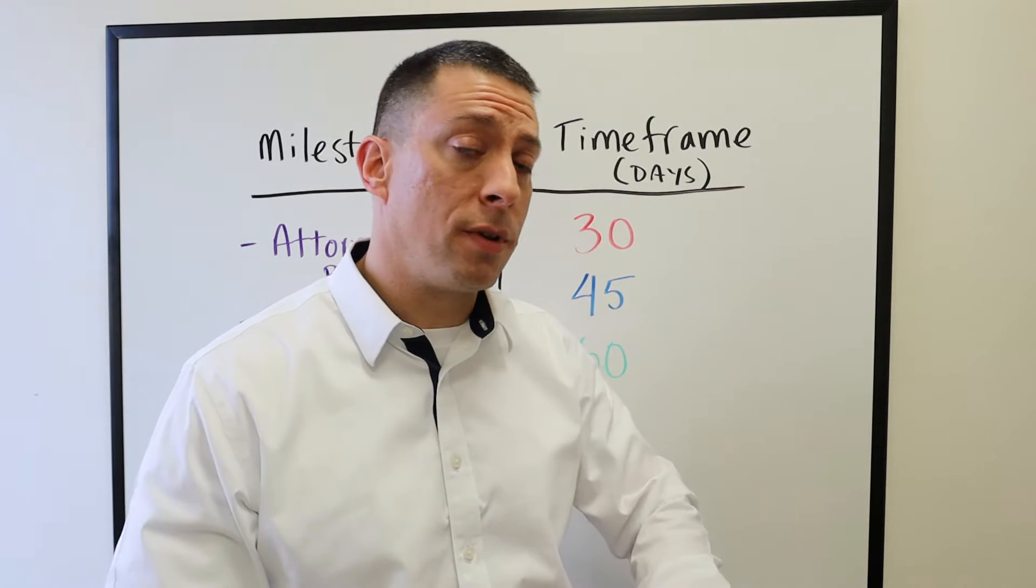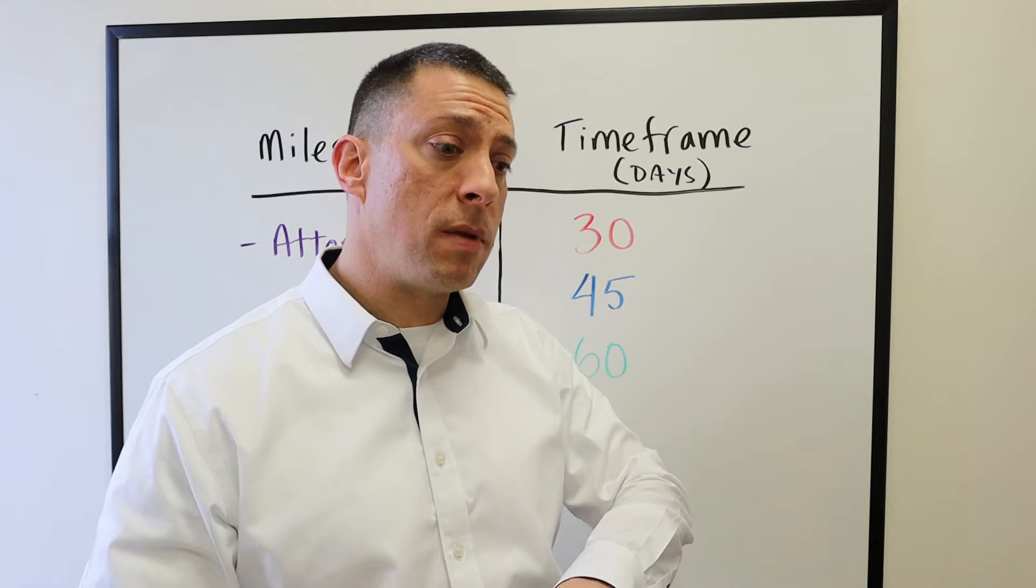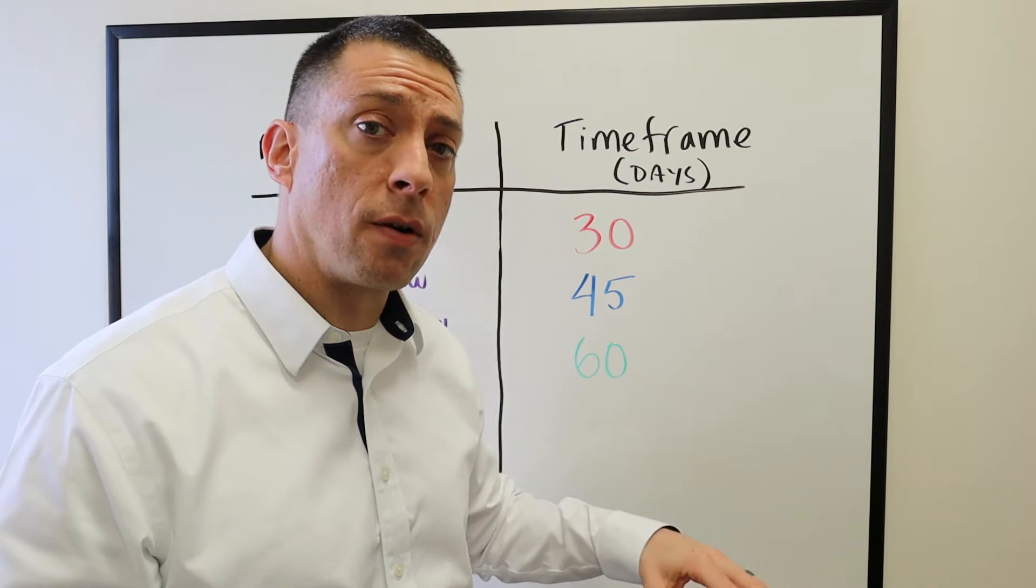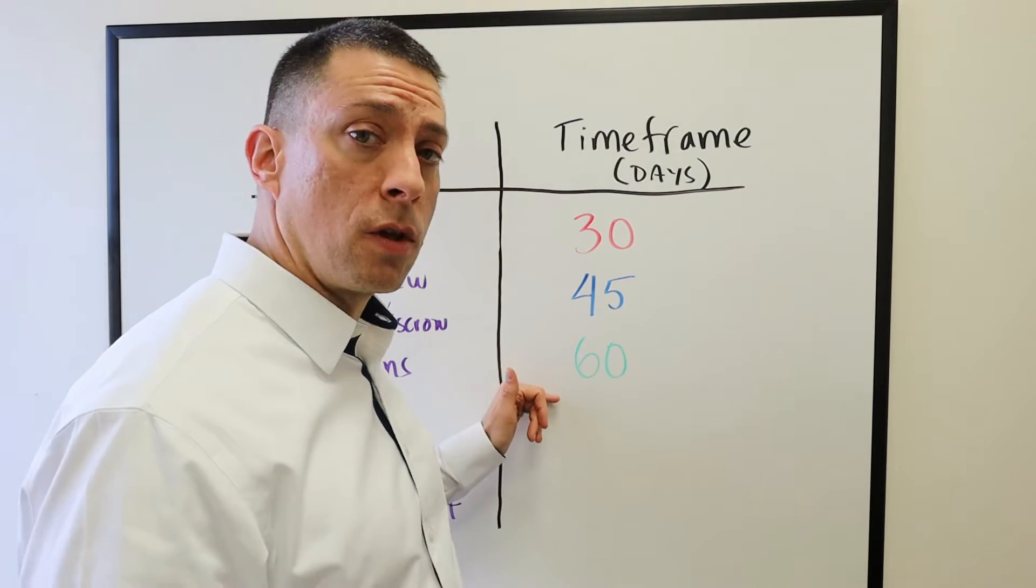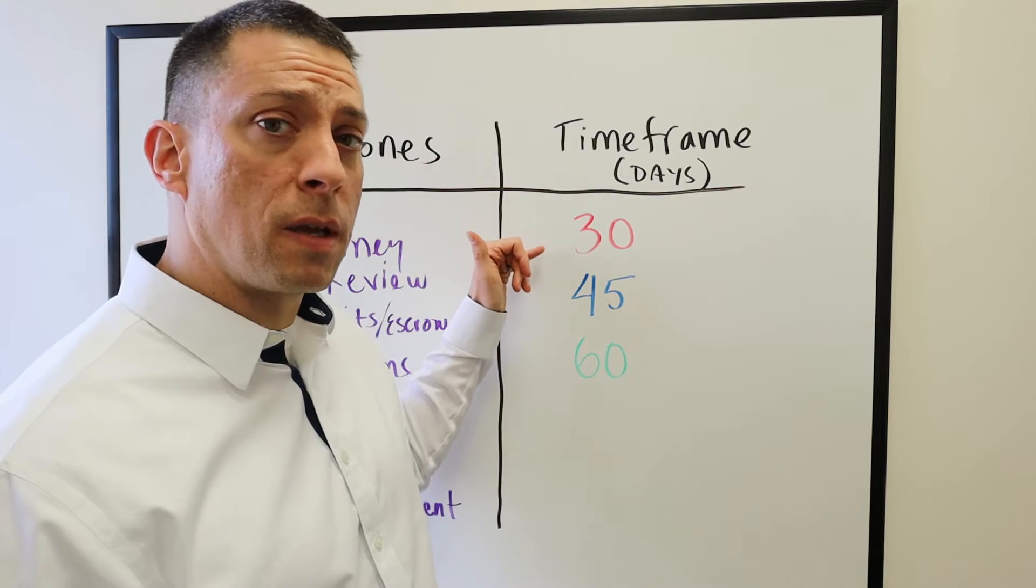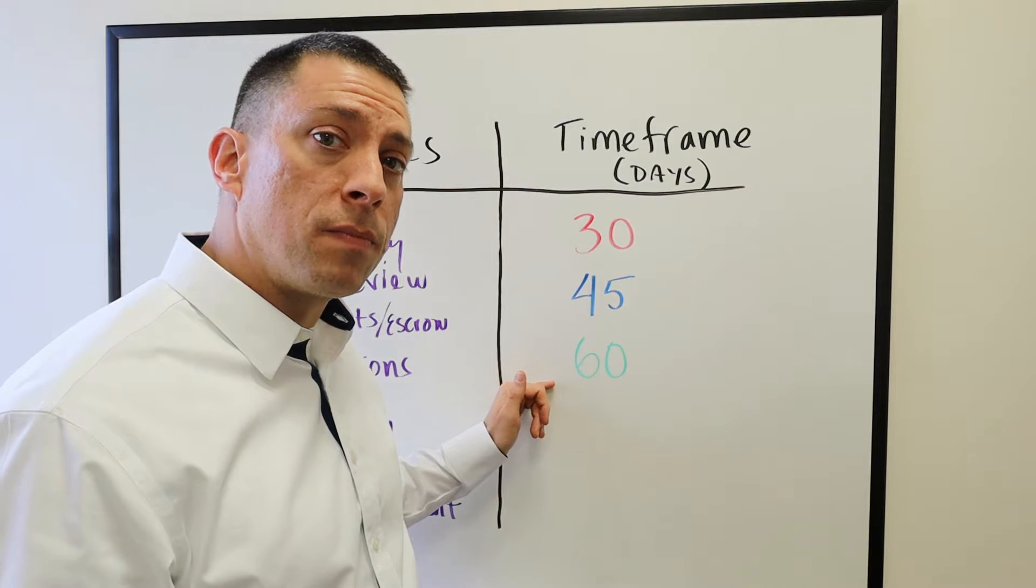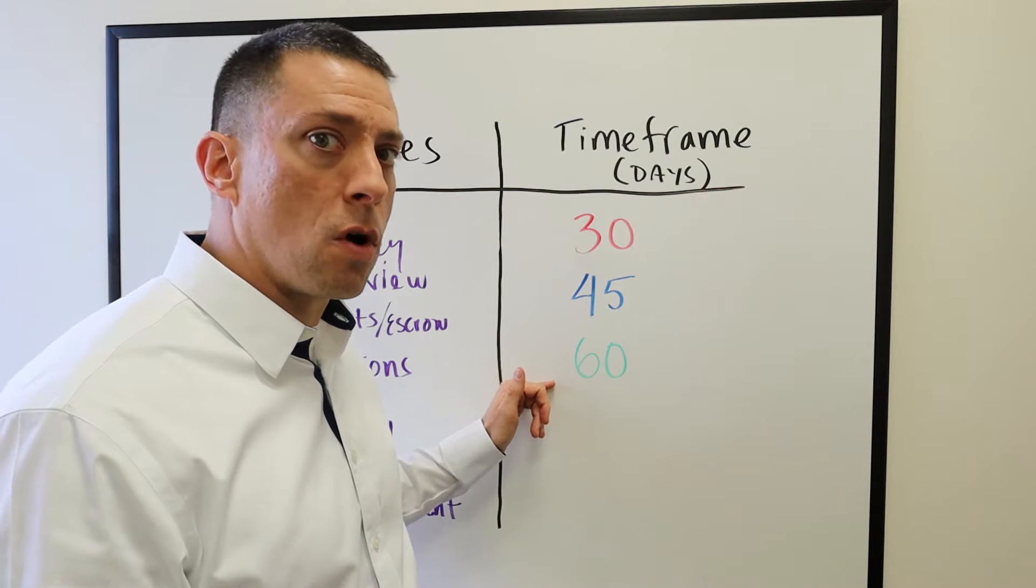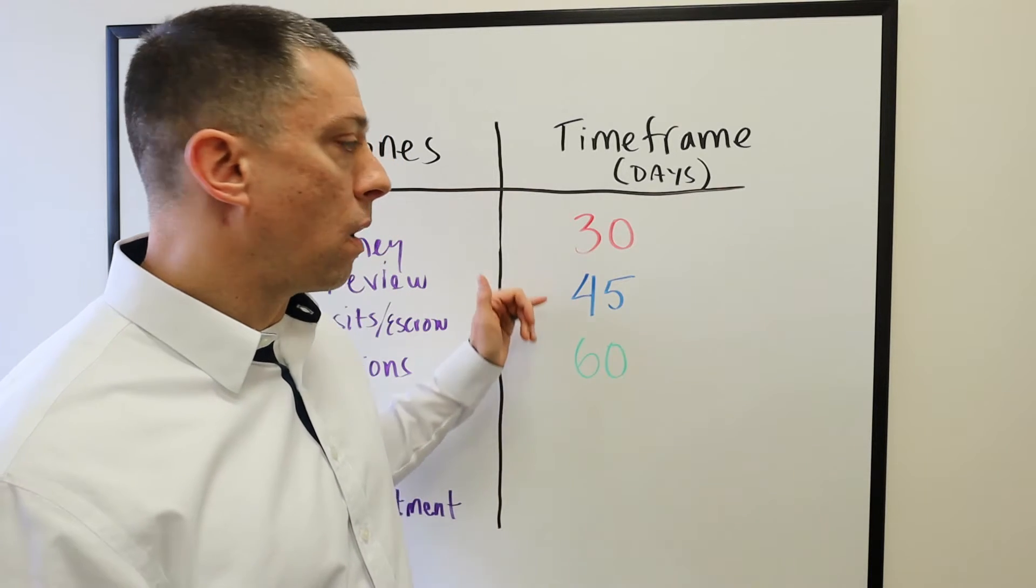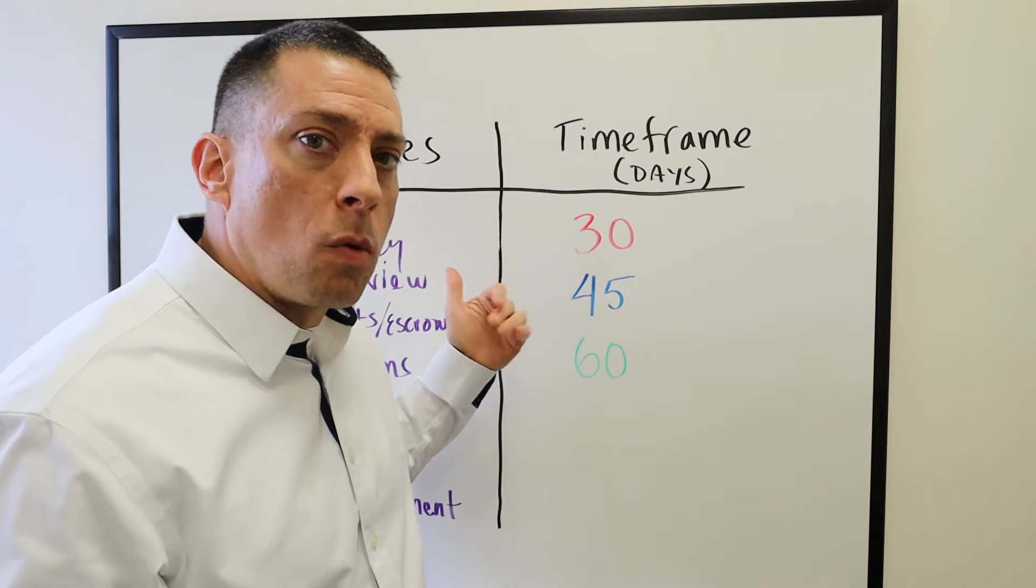Keep in mind that these are all negotiable. There's nothing that has to be a certain way. The buyer and seller can negotiate how long the closing is going to take. Generally speaking, 30 days is fairly quick, 45 days is most common, and 60 days is a fairly long closing. Now, how do you decide what it is?